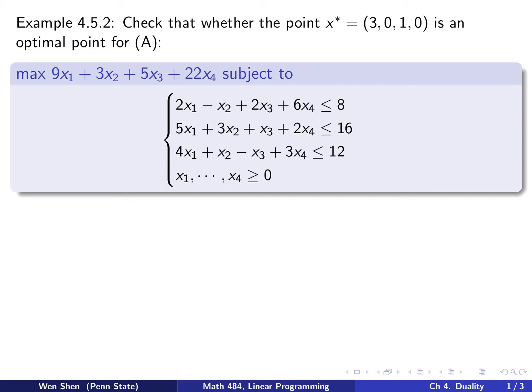Let's read the statement. Here you are asked to check whether a point that's given here, x star, to verify if it is an optimal solution for this problem, which we call A. The problem here is a max problem, maximizing objective function. I have three constraints and restricted variables, so pretty standard looking problem.